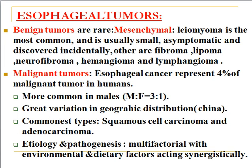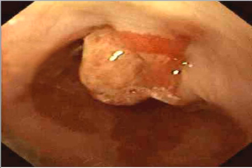Malignant tumors are more common in males, about 3 to 1 compared to females, with great variation in geographical distribution — more common in West Asia. The most common benign tumor of the esophagus is leiomyoma; the most common malignant tumor is squamous cell carcinoma. Leiomyoma is mesenchymal and squamous cell carcinoma is of epithelial origin. The endoscopic appearance of benign tumors shows a swelling in the lower end of esophagus, usually discovered incidentally.